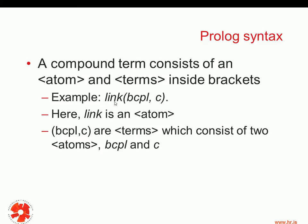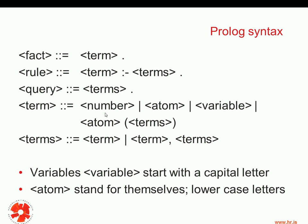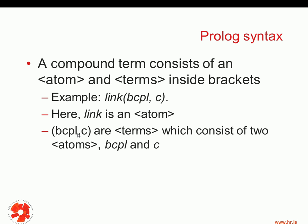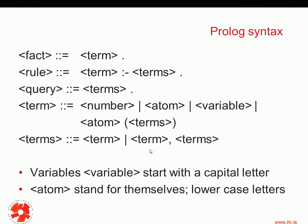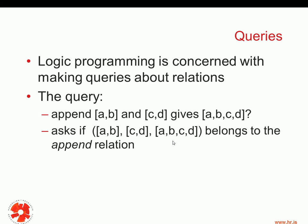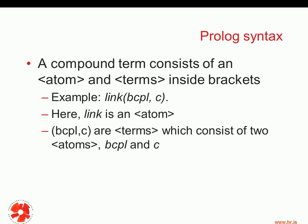One example of a compound term would be 'link' — this is a name of a relation — and then parentheses open, BCPL, C. So 'link' here is an atom according to this grammar: atom, parenthesis open, terms, parenthesis close. And BCPL and C are terms which consist of two atoms. Inside the parentheses, terms can be a term followed by a comma followed by more terms. In this case we have two atoms, BCPL comma C, both spelled with lowercase letters.